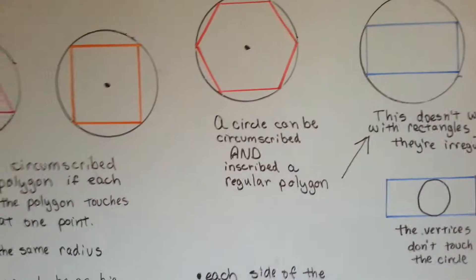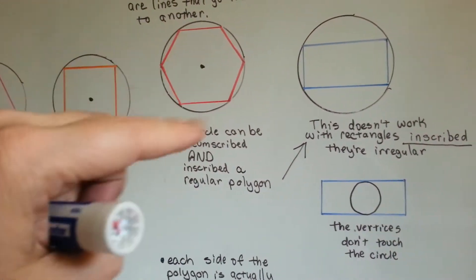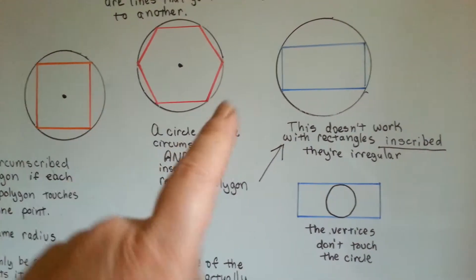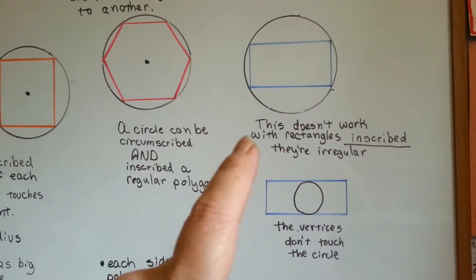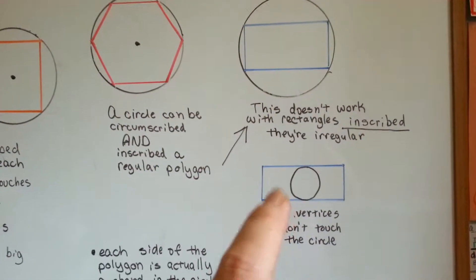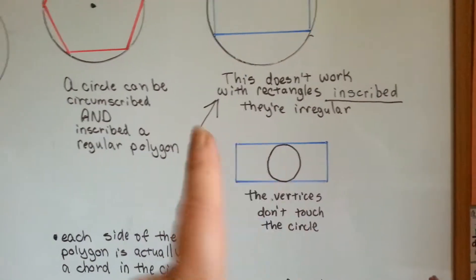A circle can be circumscribed and inscribed around a regular polygon. But it doesn't work with rectangles, the inscribed ones. It can be circumscribed, but it can't be inscribed. That's irregular. See how the vertices don't touch the circle? So that doesn't work.